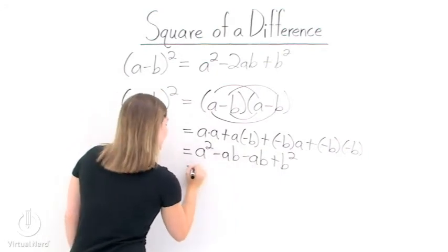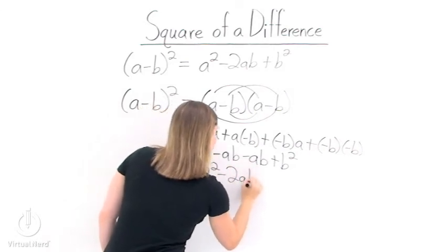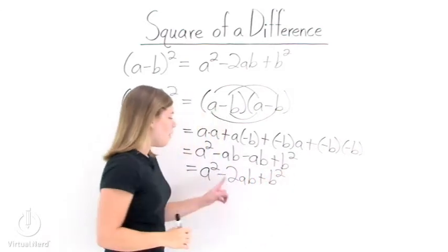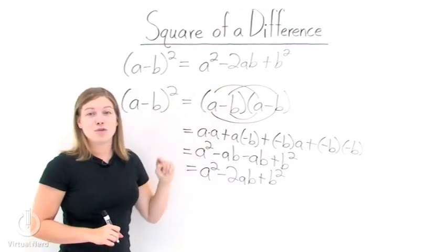So let's combine these like terms: a squared minus 2ab plus b squared. When we do that, we get the right-hand side of our formula. That means this formula is correct.